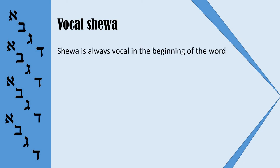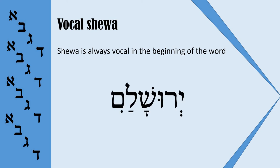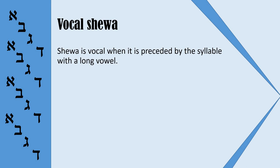Let us briefly consider the rules for vocal Sheva. Sheva is always vocal at the beginning of the word. For example, Yerushalayim — the first Sheva is vocal and is pronounced like a very, very short E. Sheva is also vocal when it is preceded by a syllable with a long vowel. So, when the preceding vowel is short, Sheva is silent; when the preceding vowel is long, Sheva is vocal.